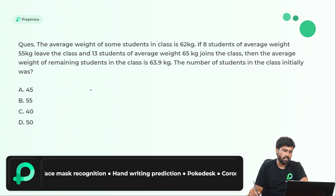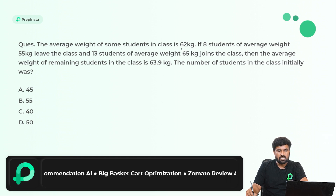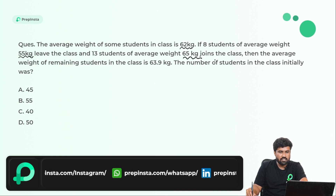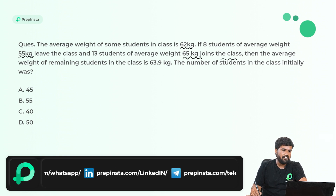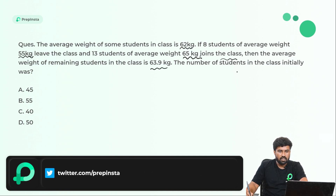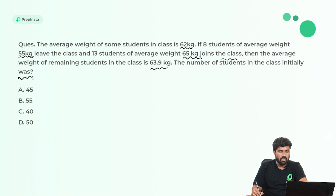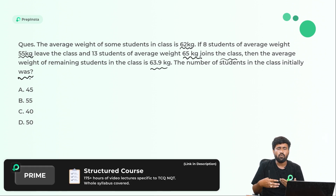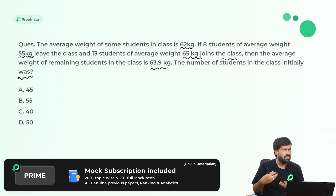Here's the first question. The average weight of some students in a class is 62 kg. If 8 students of average weight 55 kg leave the class and 13 students of average weight 65 kg join the class, the average weight of the remaining students in the class is 63.9 kg. Find the number of students in the class initially. The problem may look a little lengthy, but if you go through the regular process it will take more than one and a half minutes. I'll teach you how to do this problem smartly.